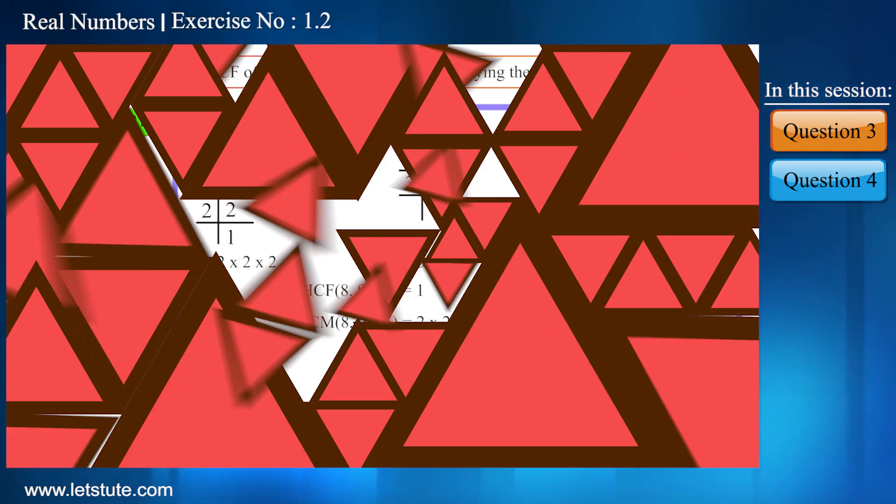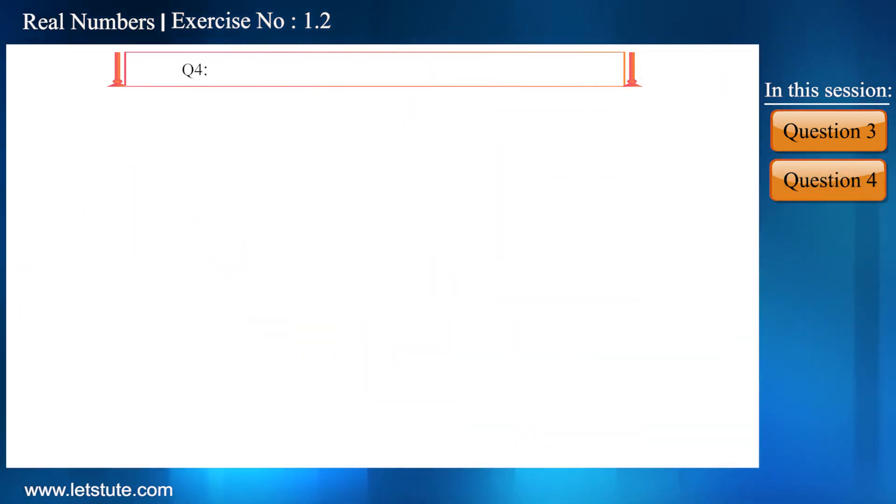Now moving further, let's take the fourth question. Given that HCF(306, 657) is equal to 9, find the LCM(306, 657).